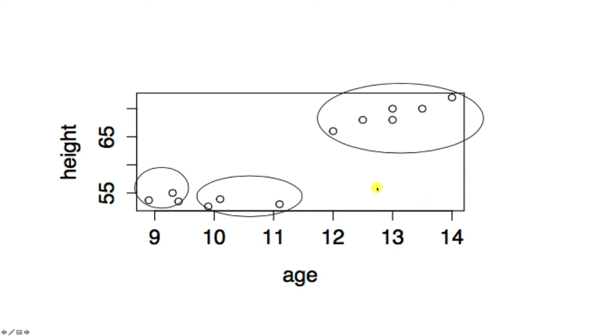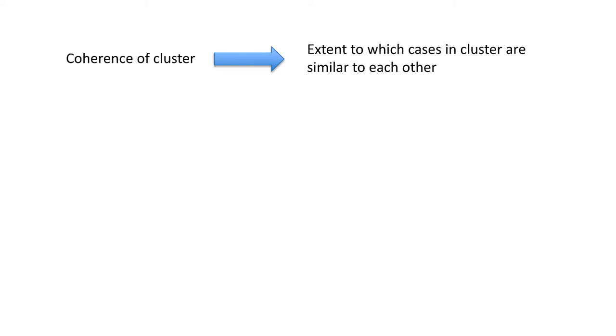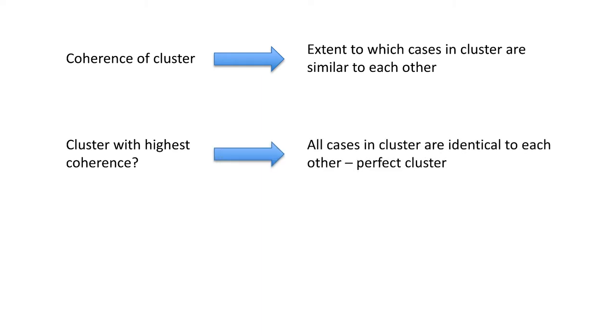As we have said, we want the cases in a cluster to be more similar to each other than to cases in other clusters. In other words, we are talking about the coherence of a cluster. Coherence is essentially the extent to which the cases in the cluster are similar to each other. The highest coherence possible is when all the cases are completely identical — that is the lowest amount of variability.